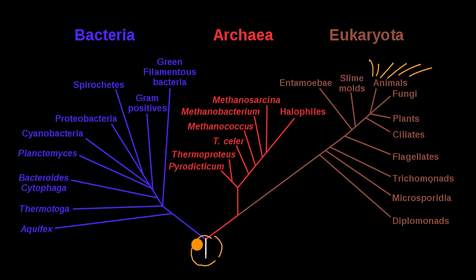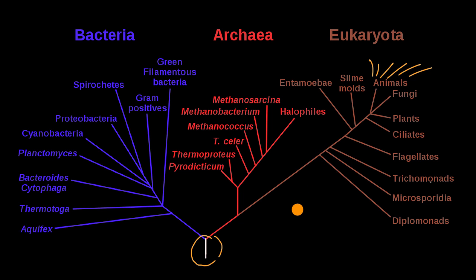One piece of evidence is by looking at the cellular level and looking at commonalities amongst different groups, and realizing that it would be unlikely for them to develop independently of each other.